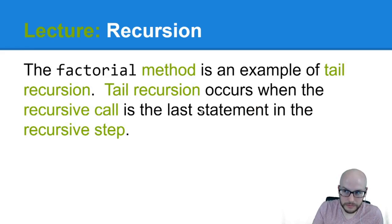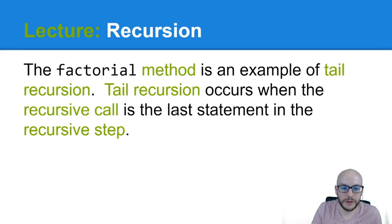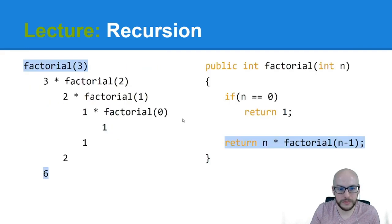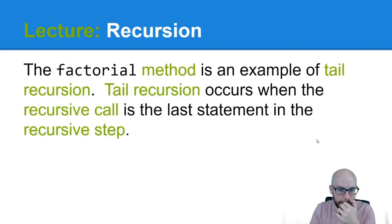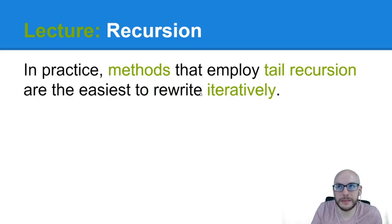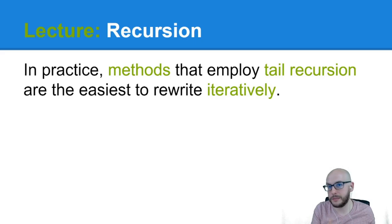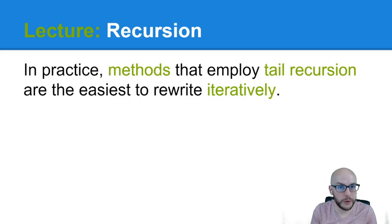The factorial method is an example of tail recursion. Tail recursion occurs when the recursive call is the last statement in the recursive step — the very last thing that happens in the recursive step is the recursive call. In practice, these methods tend to be the easiest to rewrite iteratively. We talked at the very beginning that recursion is an alternative to iteration, and anything written iteratively can be written recursively and vice versa.